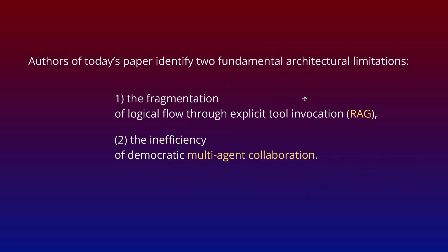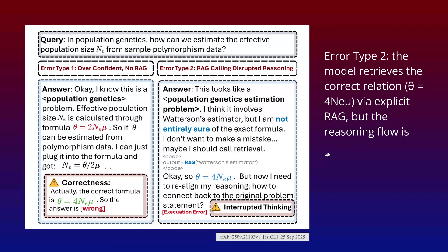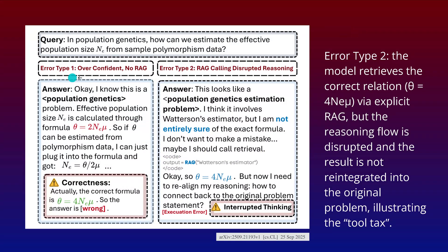Two fundamental architectural limitations we're going to talk about, and their solutions. We have a fragmentation of the logical flow of the reasoning traces of GPT-5 through explicit tool invocation. Whenever we have to call RAG — retrieval augmentation — just to get new external data, the reasoning process is interrupted. Plus, we see inefficiency in democratic multi-agent collaboration with majority voting. Error type one: our LLM is overconfident, there's no RAG at all — the LLM goes to its parametric knowledge and says it knows a formula, but it turns out to be a pure hallucination.